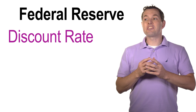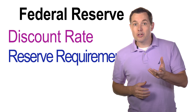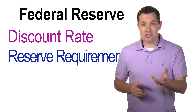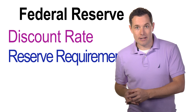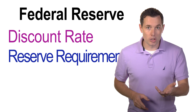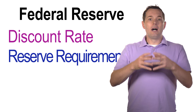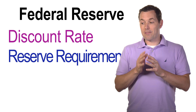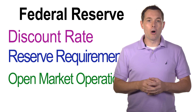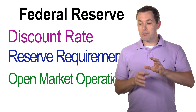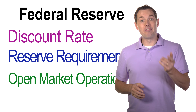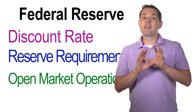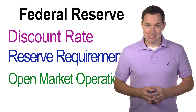Next, the Federal Reserve sets something known as reserve requirements — how much money the Federal Reserve requires banks to keep on hand, either cash in their vaults or deposits at one of the Federal Reserve banks. The third primary tool is open market operations, which is when the Fed buys or sells securities from or to banks — usually government bonds — but we'll come back to that in a minute.